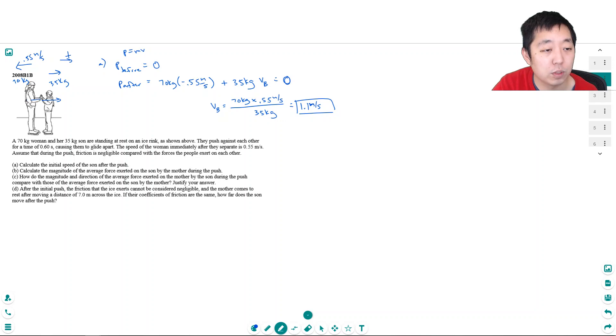The equation you want to look at is F delta T equals M delta V. This is called impulse momentum theorem. This is the impulse and the momentum theorem.